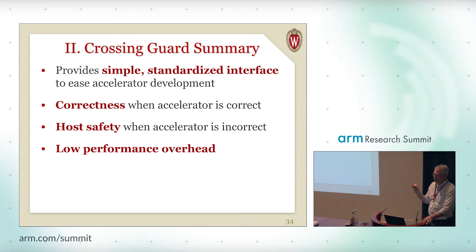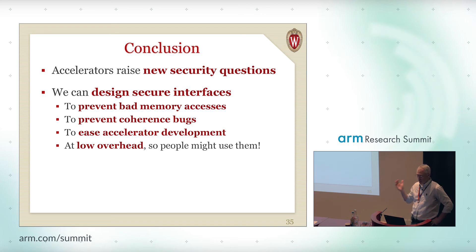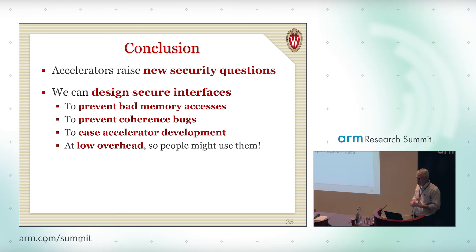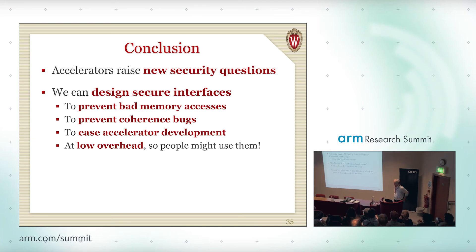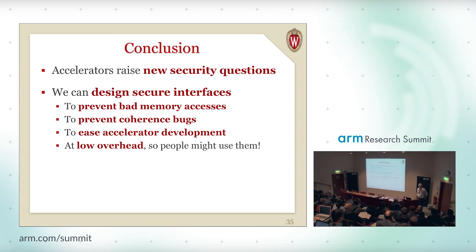Crossing guard provides a simple standardized interface to ease accelerator development, guarantees correctness when the accelerator is correct, and provides host safety when the accelerator is incorrect — with very low performance overhead. In summary: accelerators raise new security concerns, and we've shown that we can design secure interfaces to prevent bad memory accesses, to prevent coherence bugs, to ease accelerator development, and do all of this at low overhead so somebody might actually want to use them. I'm happy to take some questions, but I'll leave you with the list of papers describing crossing guard, border control, and a third paper on the threat model and taxonomy for third-party accelerators.